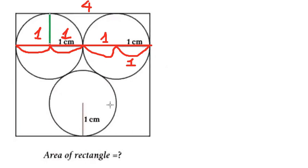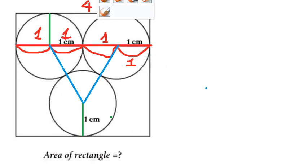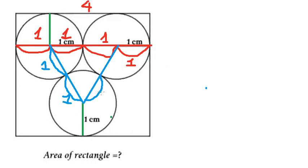This one is about number one, and this one is about number one. Now I need to highlight the blue color — that is about this triangle. We can see that this one is about number one because this is about the radius of this circle, similarly for this circle. So this triangle here is an equilateral triangle.